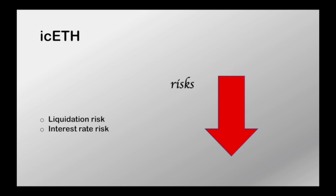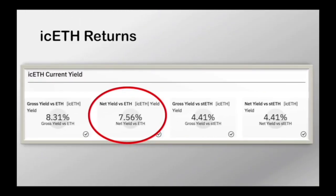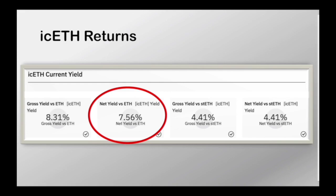Another risk to consider is interest rate risk, related to the staking rate for staked ETH and the borrow rate for ETH. Incremental yield can only be generated if the staked ETH staking rate exceeds the Ethereum borrow rate. The return on icETH is variable — the effective yield changes as staking and borrow rates fluctuate. At the time of recording, the yield on icETH versus ETH is 7.56%. If the spread between the staking rate and borrow cost compresses, icETH holders realize less yield; if it expands, they realize more. The icETH dashboard that Index Coop provides helps you monitor current and historical yield and key metrics — I'll link the dashboard in the description.